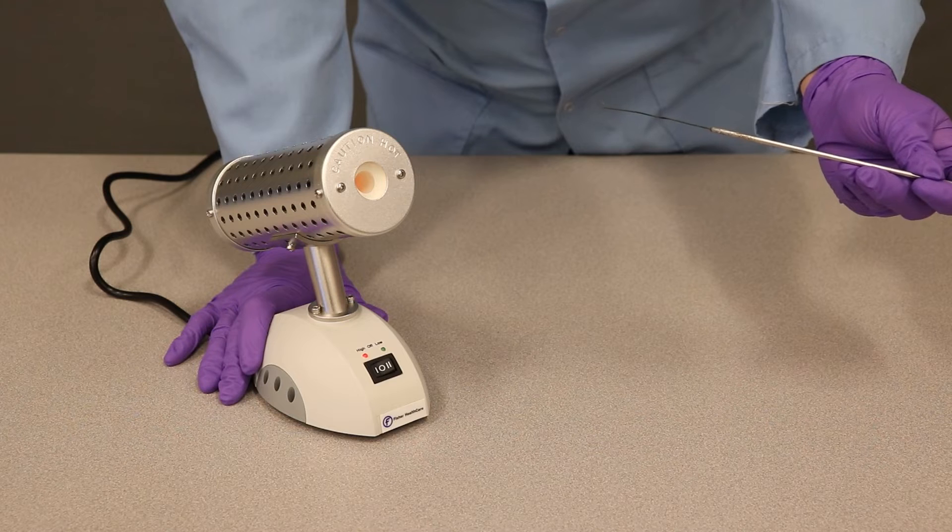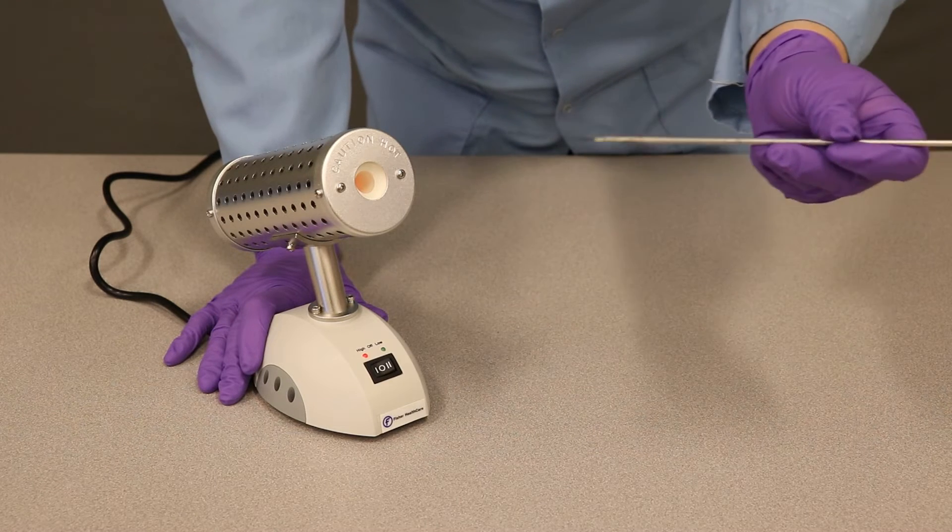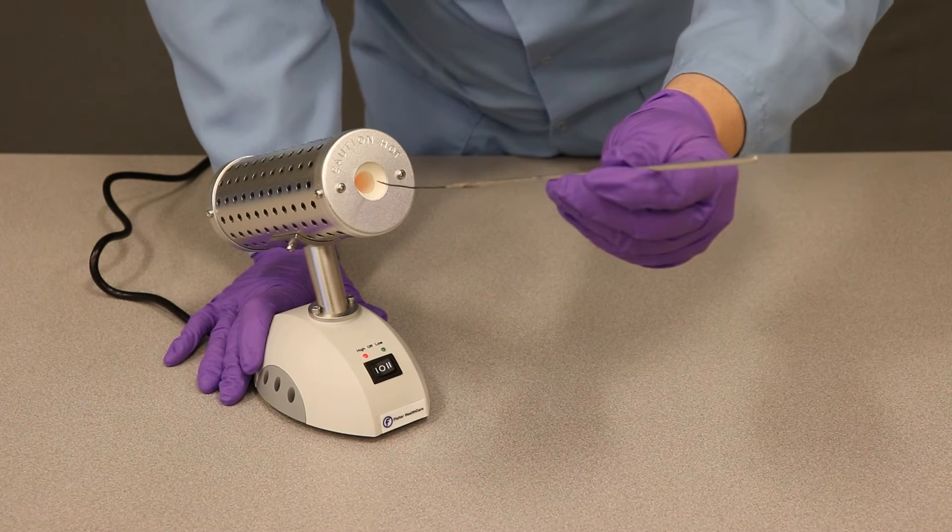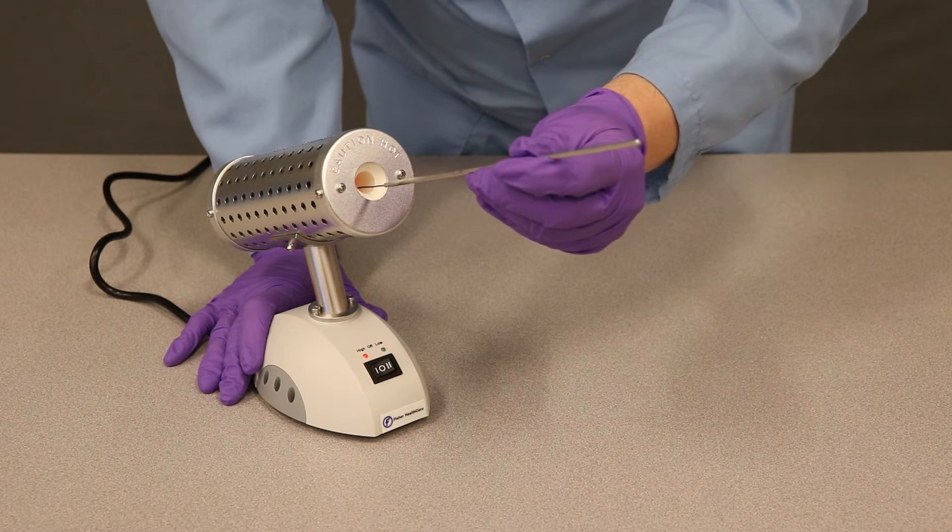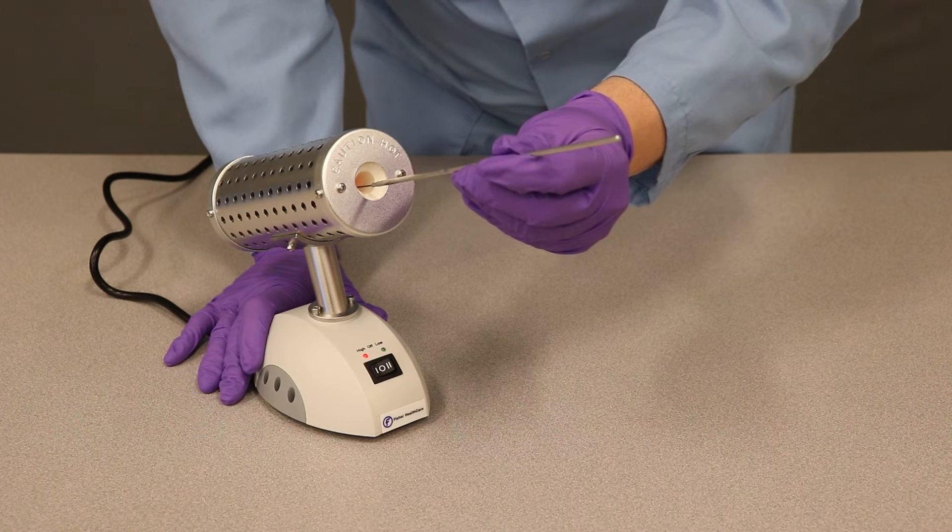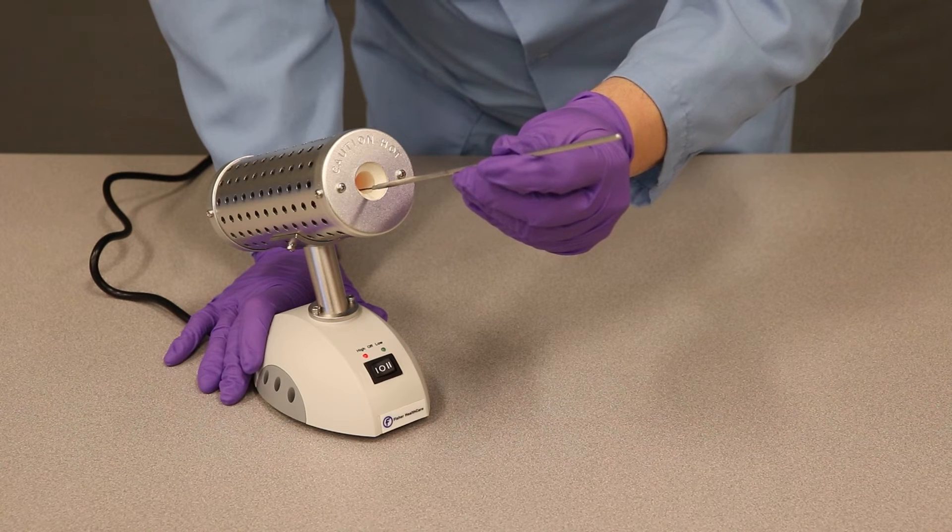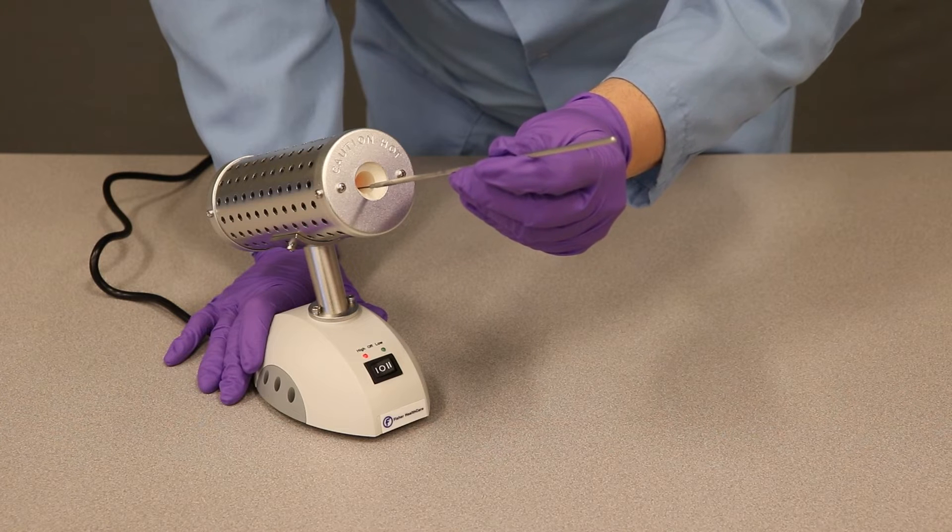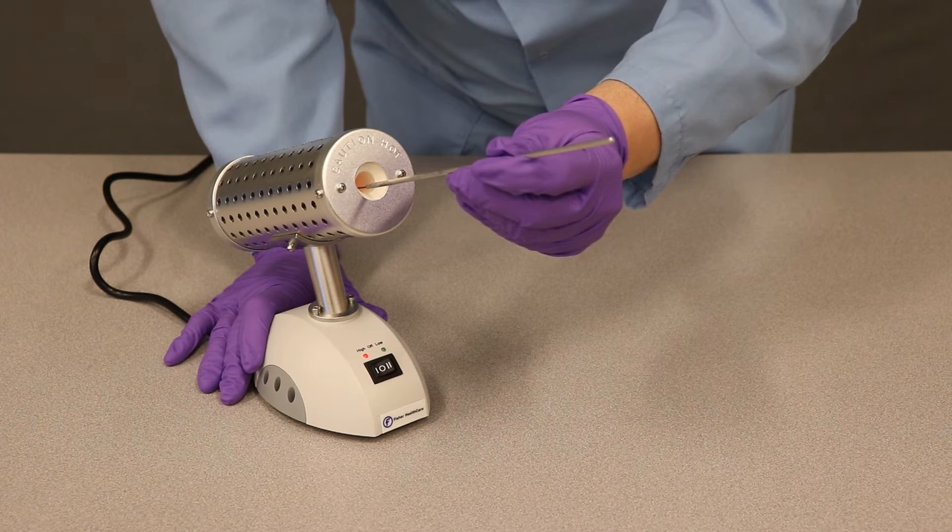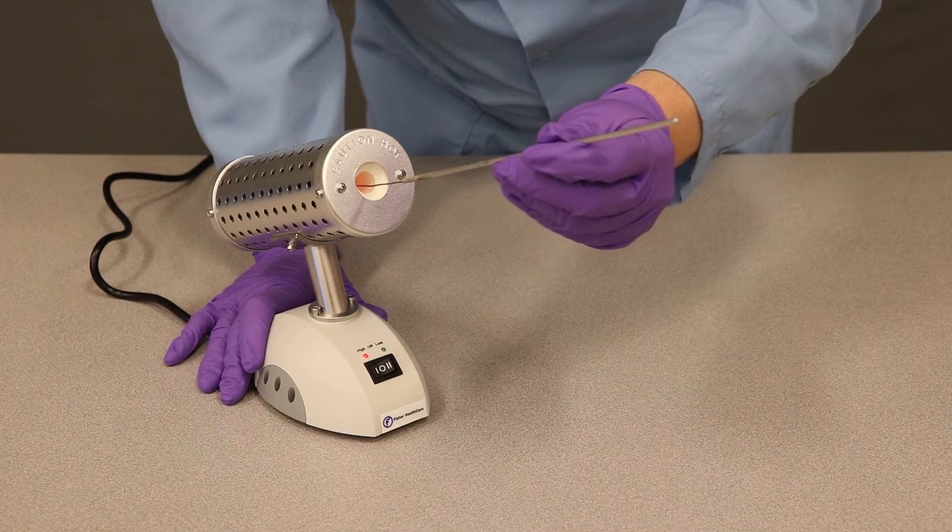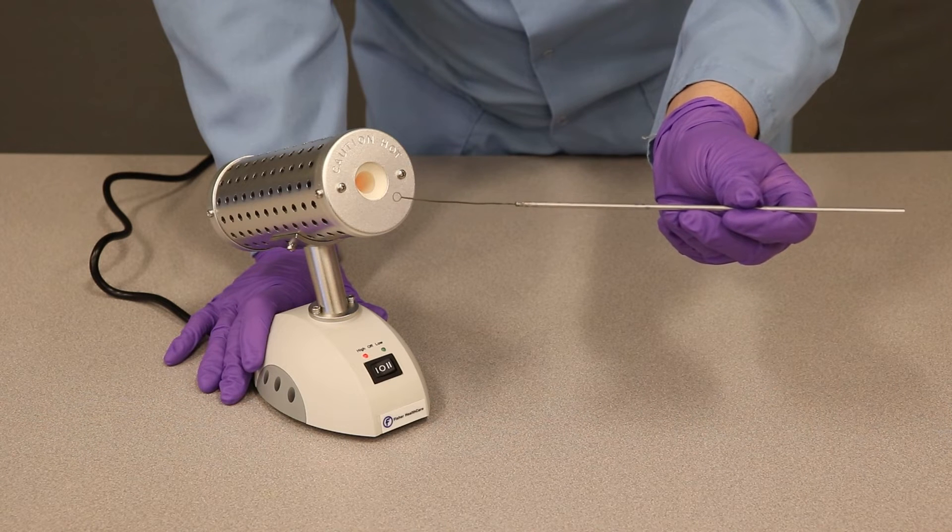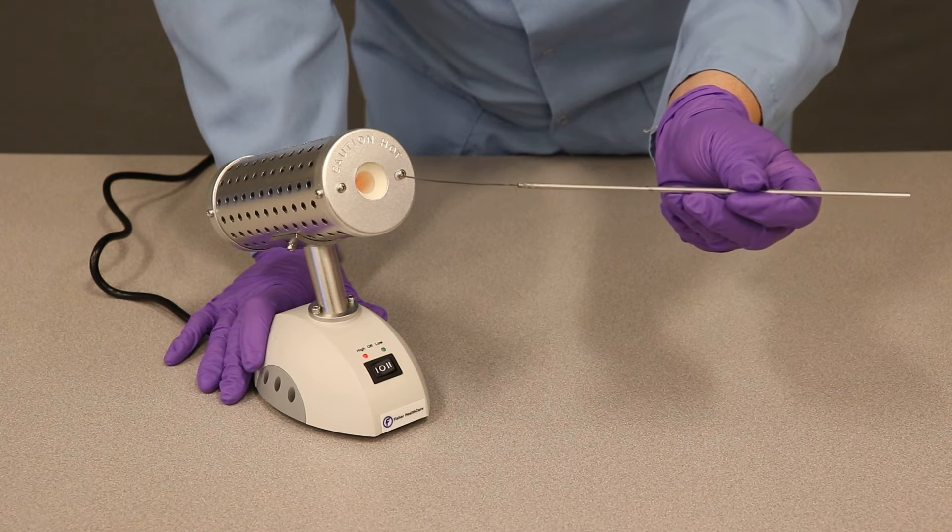When the Bact incinerator is heated up, you can take your inoculating loop and insert it into the main central section. You want to make sure that you do not scratch the sides of the mantle because that can also wear out the mantle. You leave the loop in there, making sure you push it as far into the back of the chamber as possible for about five seconds. Unlike a Bunsen burner, you do not need to have the wire glow to know that it is incinerated.